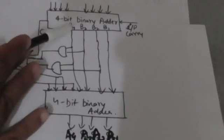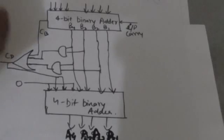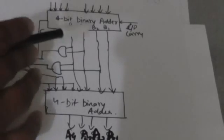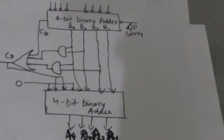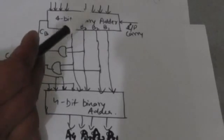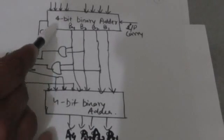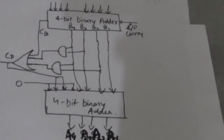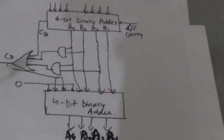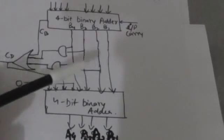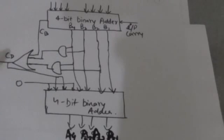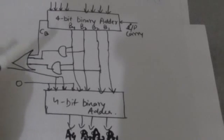This first 4-bit binary adder adds two decimal digits represented in BCD and an input carry, producing four sum bits B4, B3, B2, B1, and a carry bit CB as output. We then implement the boolean function CD using two AND gates and an OR gate. The output of the OR gate is CD.